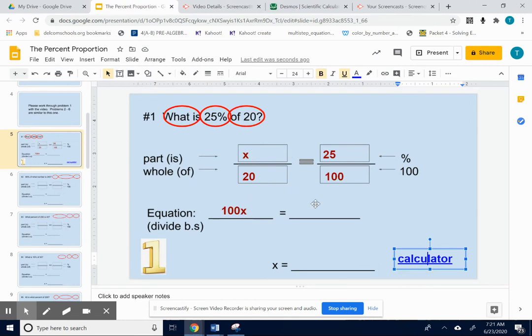So 100 times the x is equal to 500. So we have 100 times x is equal to 500. Okay, so we want to get x alone. We want to get rid of a multiplied 100. So we're going to divide by 100. Because we want x alone.